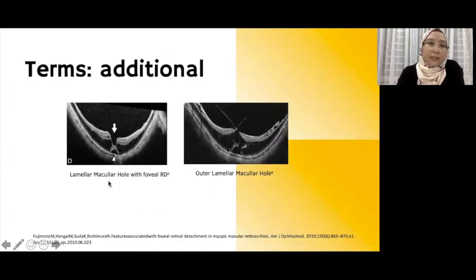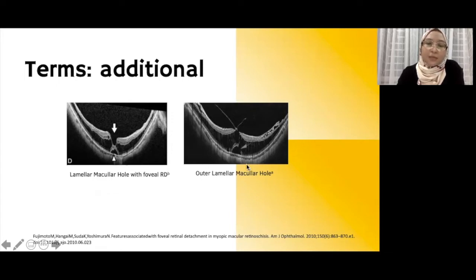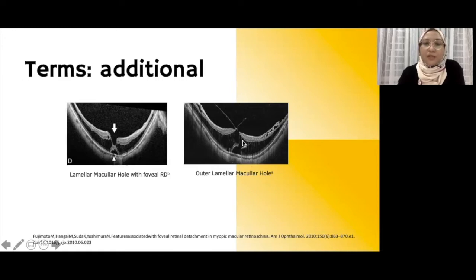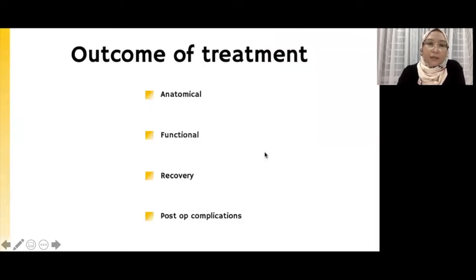Some additional OCT changes include the occurrence of lamellar macular hole with foveal detachment. There is another OCT description mentioned in the literature — the appearance of the outer lamellar macular hole. Here we can see a break in the IS/OS junction, but the inner layer of the retina remains intact, concurrently with a stretched retinal layer.